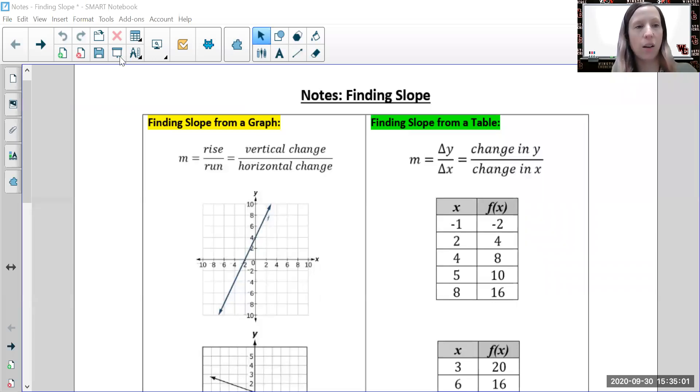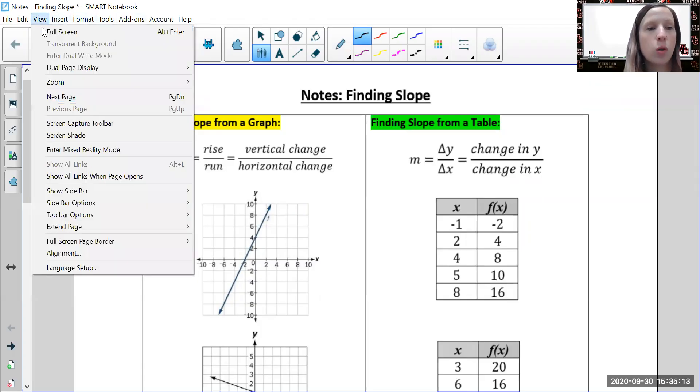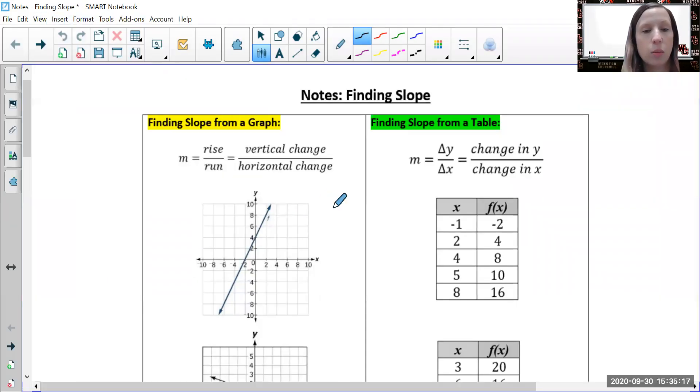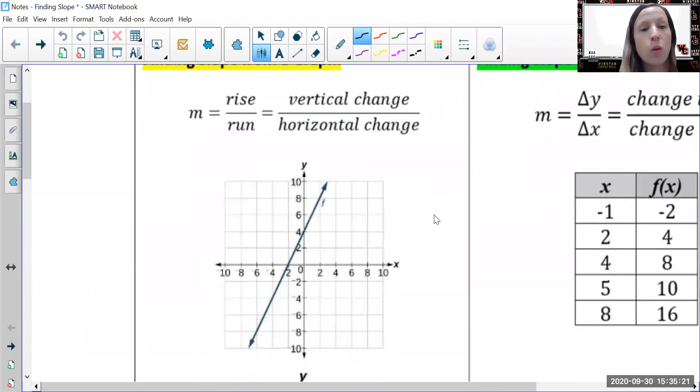First, we're going to look at graphs, which is one of the easier methods because you probably remember it from middle school. When looking at a graph, we need to find the rise over run - that's probably what you remember most from middle school.